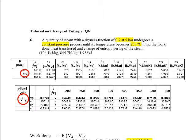We are told that a quantity of steam, dryness fraction 0.7 at 5 bar, undergoes constant pressure process heating.